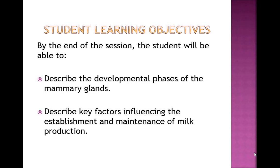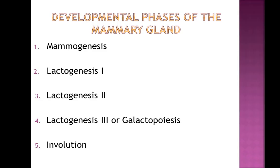We're starting off by discussing the developmental phases of the mammary glands. In order to educate families about breast milk production, it's important to understand how the breasts develop to produce milk. We'll talk about the phases of breast development: mammogenesis, then lactogenesis 1, 2, 3 — sometimes called galactopoiesis — and then involution.